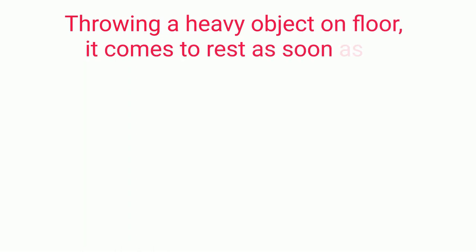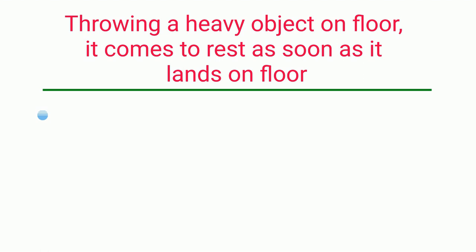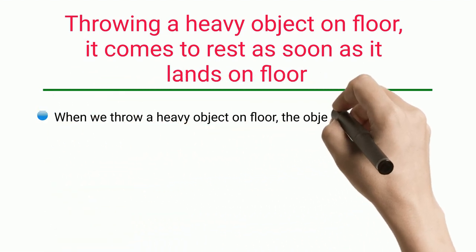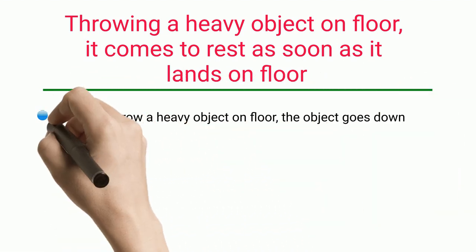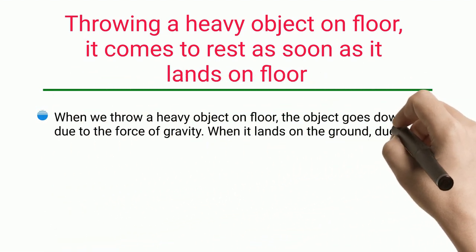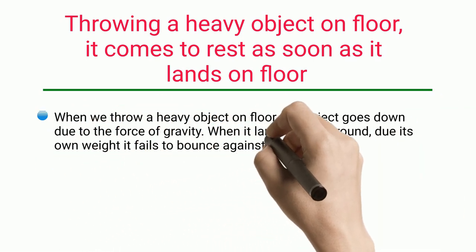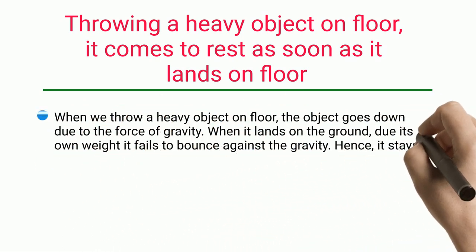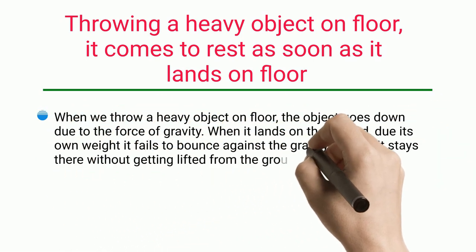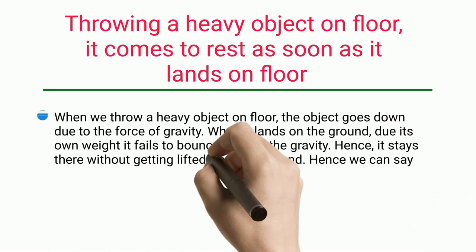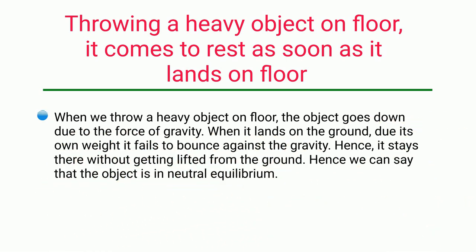Example nine: throwing a heavy object on the floor — it comes to rest as soon as it lands. When we throw a heavy object, it goes down due to gravity, and upon landing, its own weight prevents it from bouncing against gravity. Hence it stays there without being lifted from the ground, and we can say the object is in neutral equilibrium.